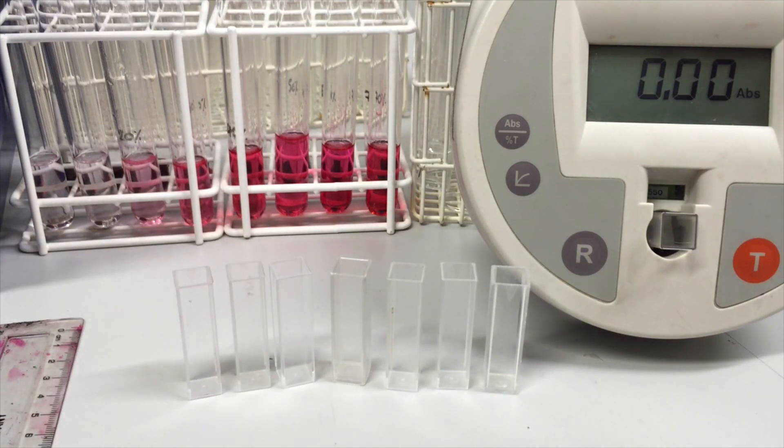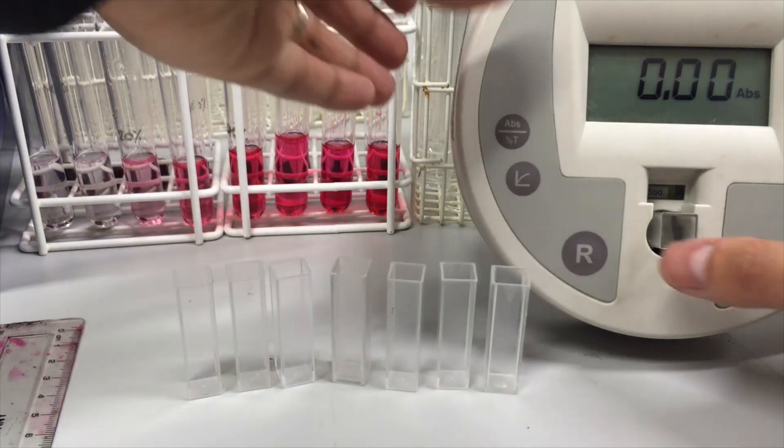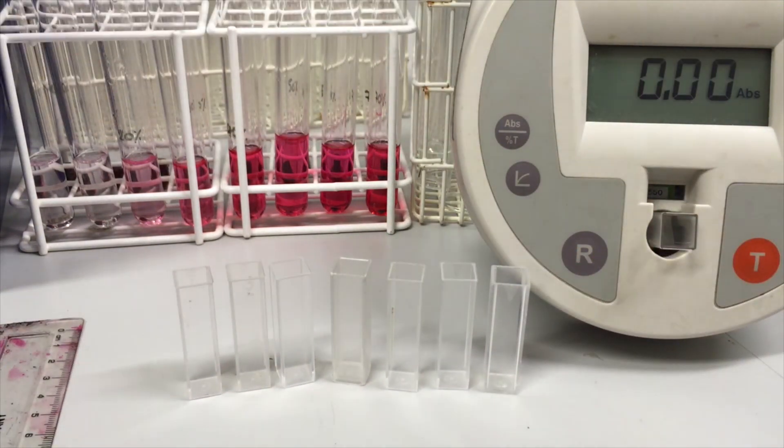Okay, right then. So let's begin. So the first thing we're going to do is set that filter up in there. So that's all ready to go. Then we put the water in the cuvette, put the cuvette in the colorimeter and take a reference reading. And that's zero.